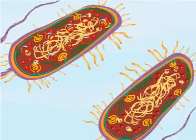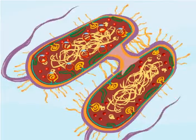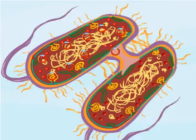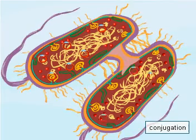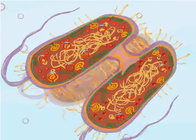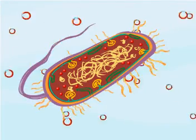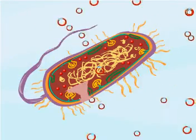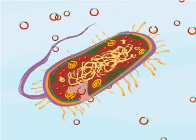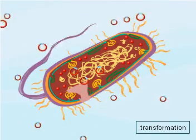Bacterial cells transfer plasmids during the process of conjugation. The plasmids currently used in genetic engineering are artificial. They are introduced into cells using the process of transformation.